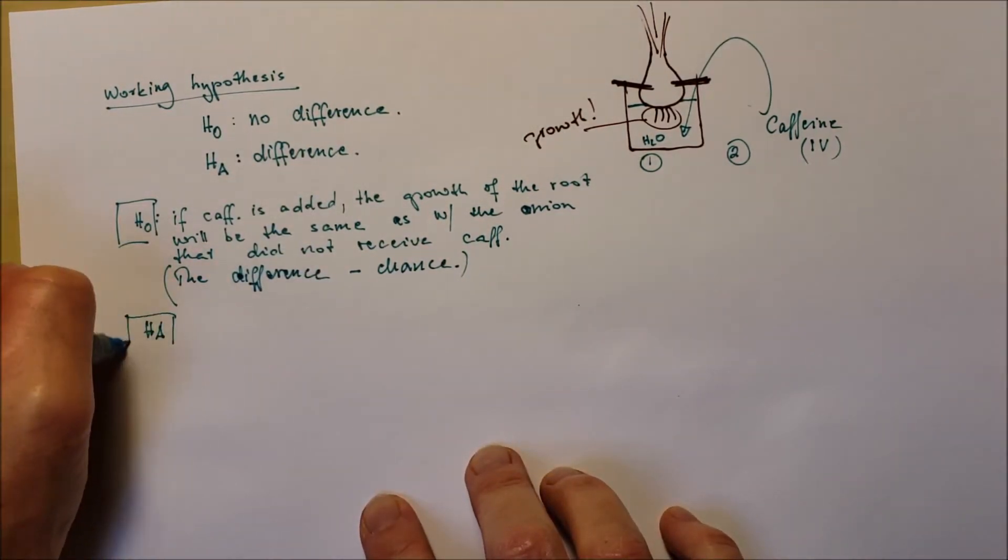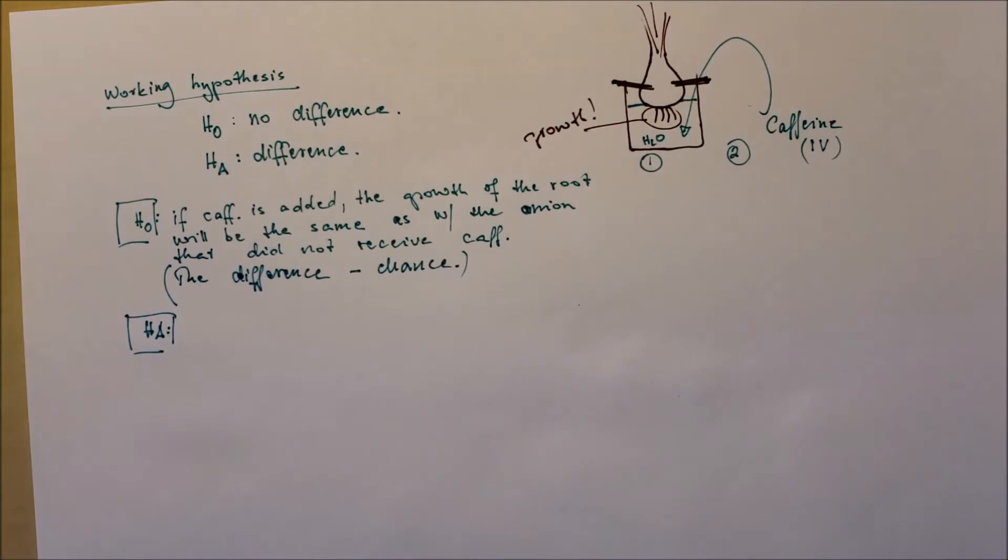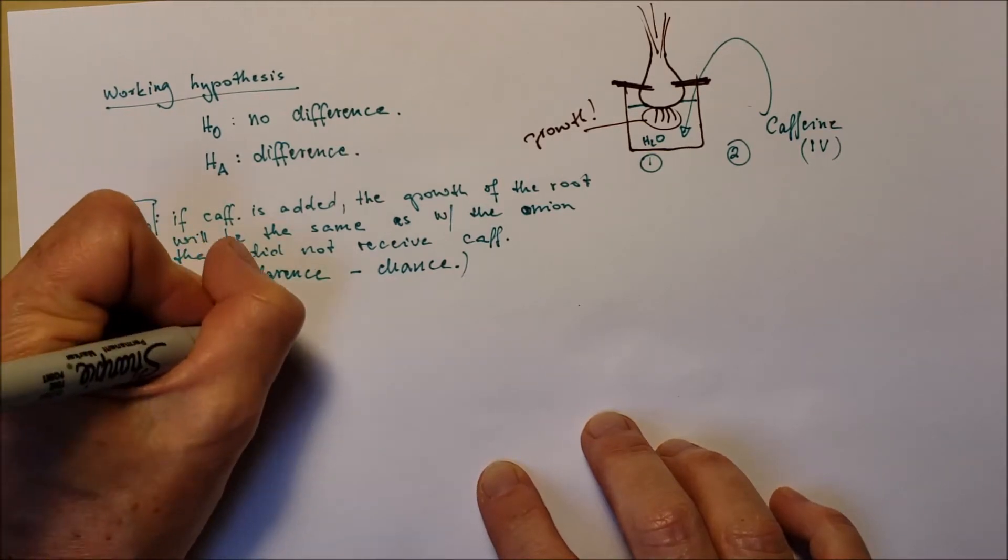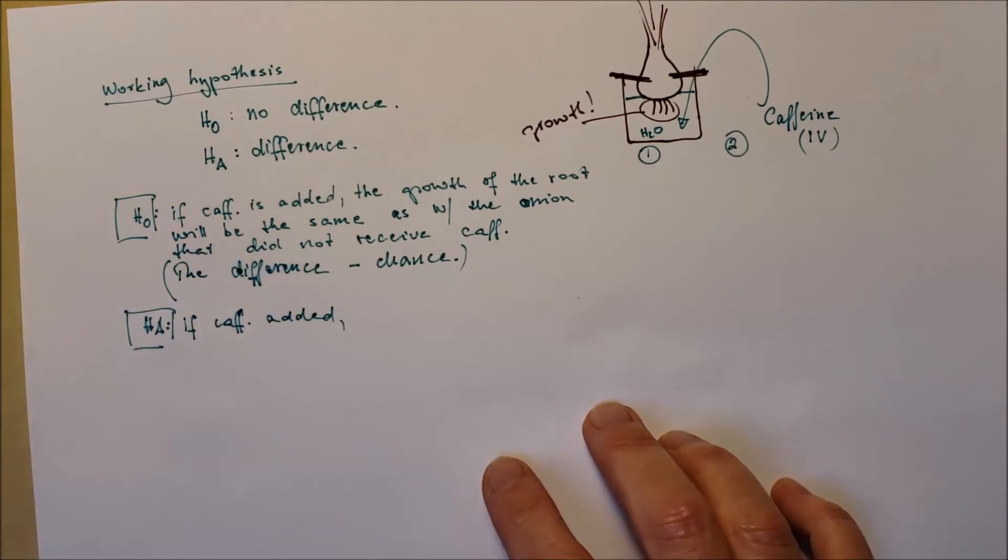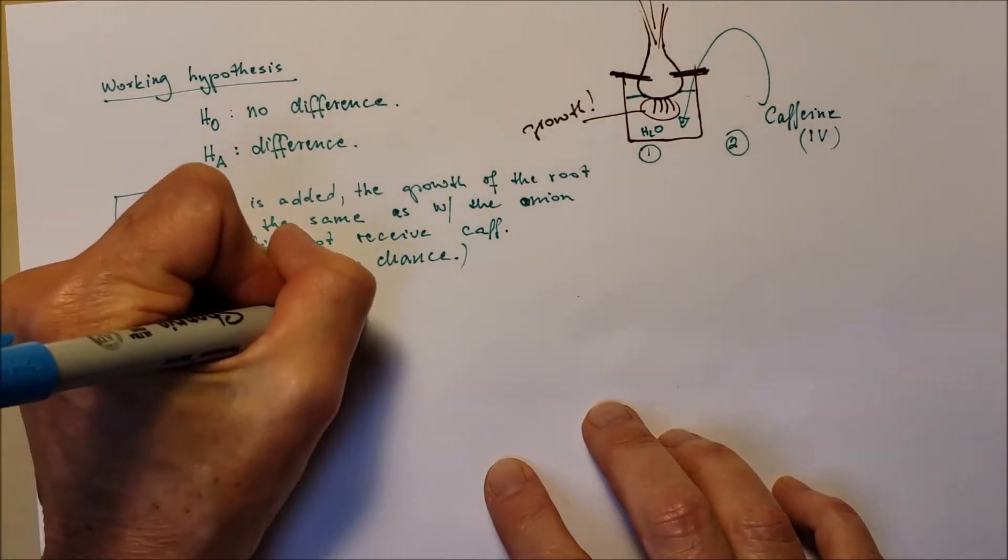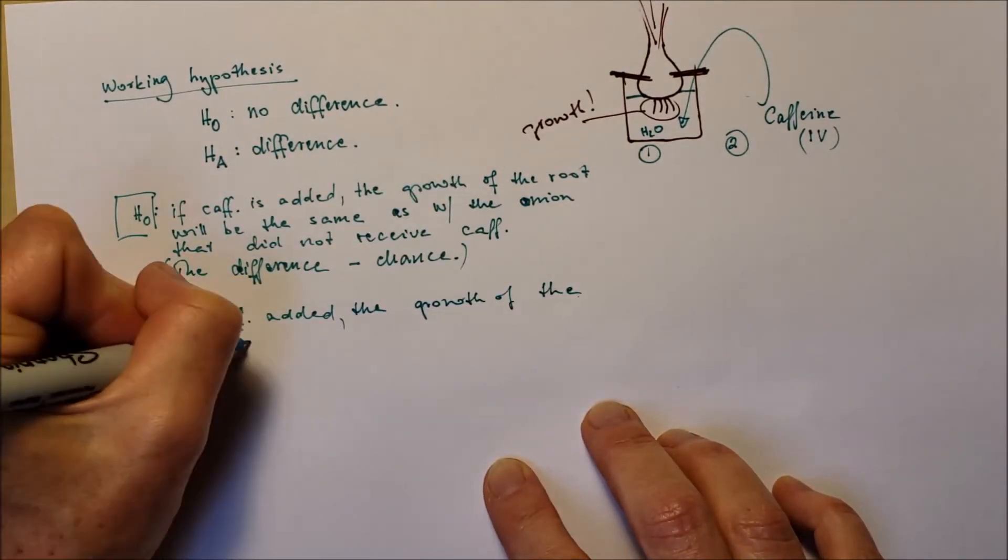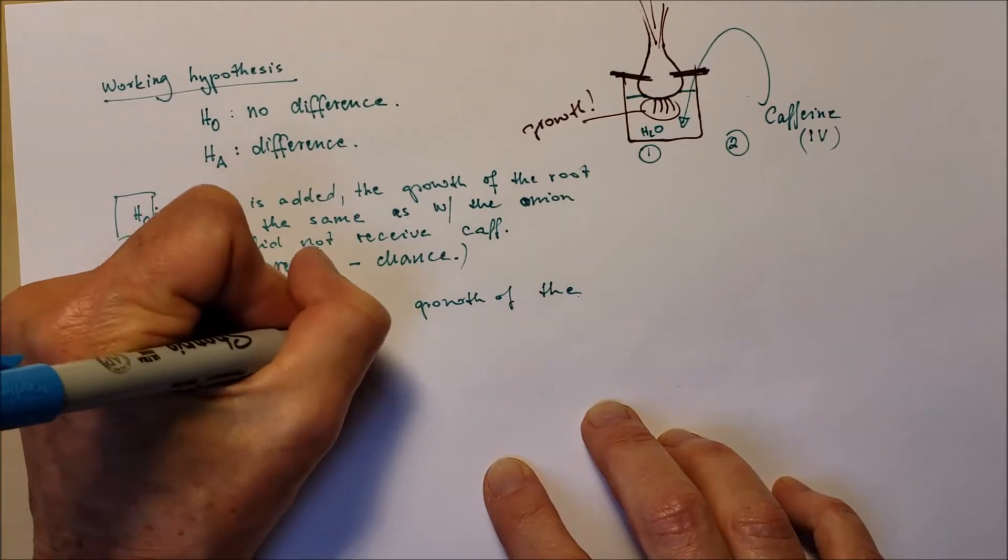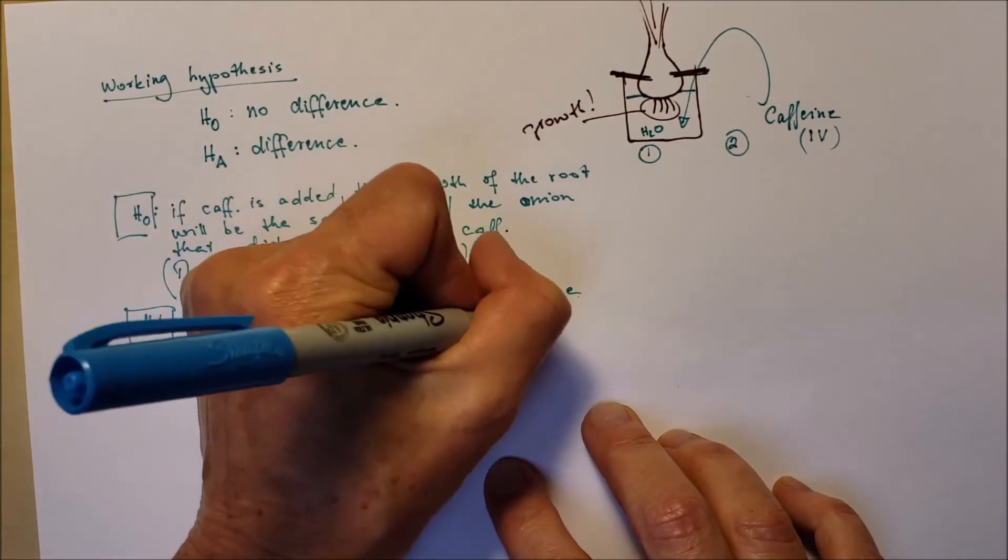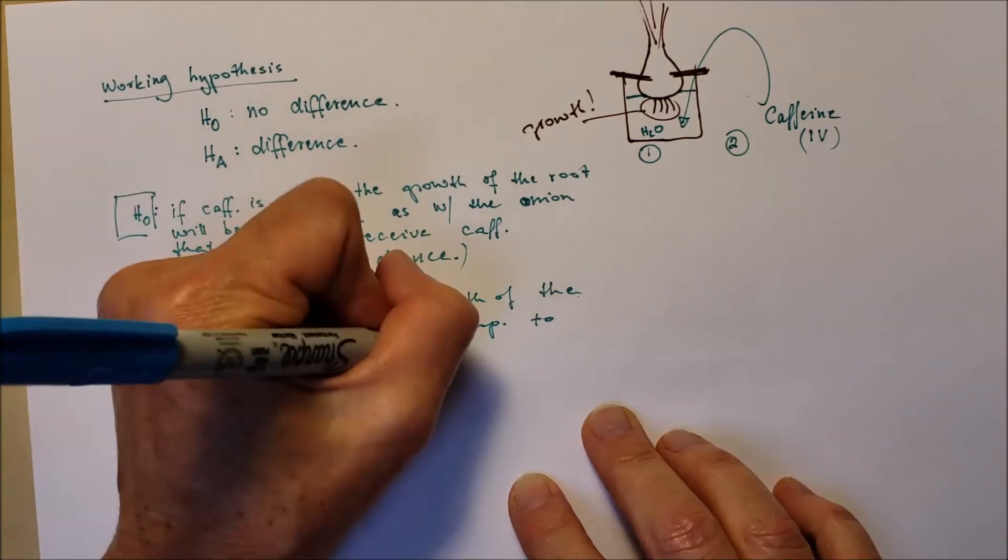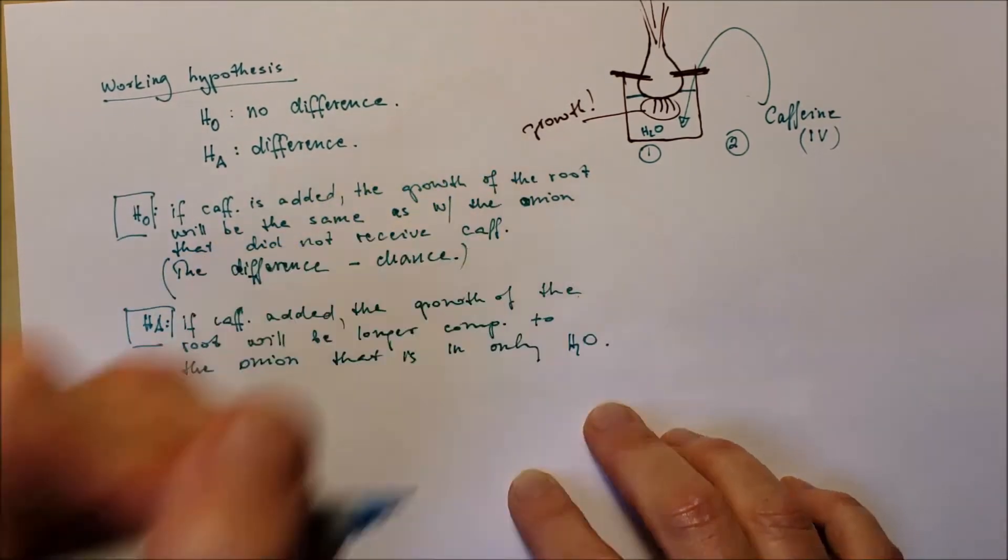The alternative hypothesis says on the other hand points out the difference. So if caffeine is added to the water, the length of the root of the onion will grow longer in size than the onion that received only water and no caffeine. So there is going to be a difference.